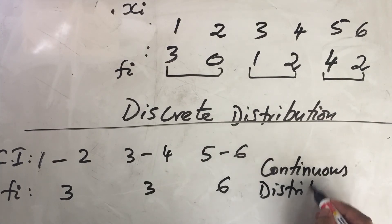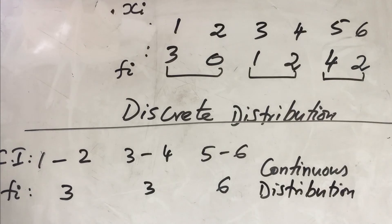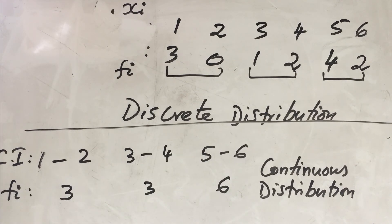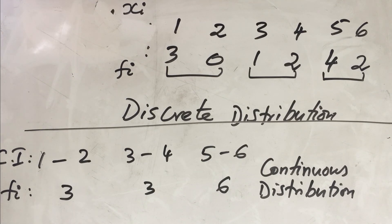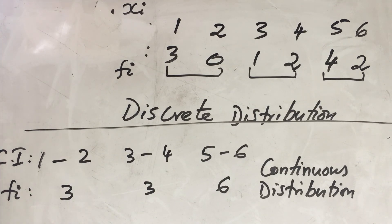So the kinds of data you will encounter in a biostatistics session are: ungrouped data, and two kinds of grouped data — discrete distribution and continuous distribution. I believe this session has been very useful. From now we will take this data for further mathematical analysis. Hope you enjoy this session — all the best!